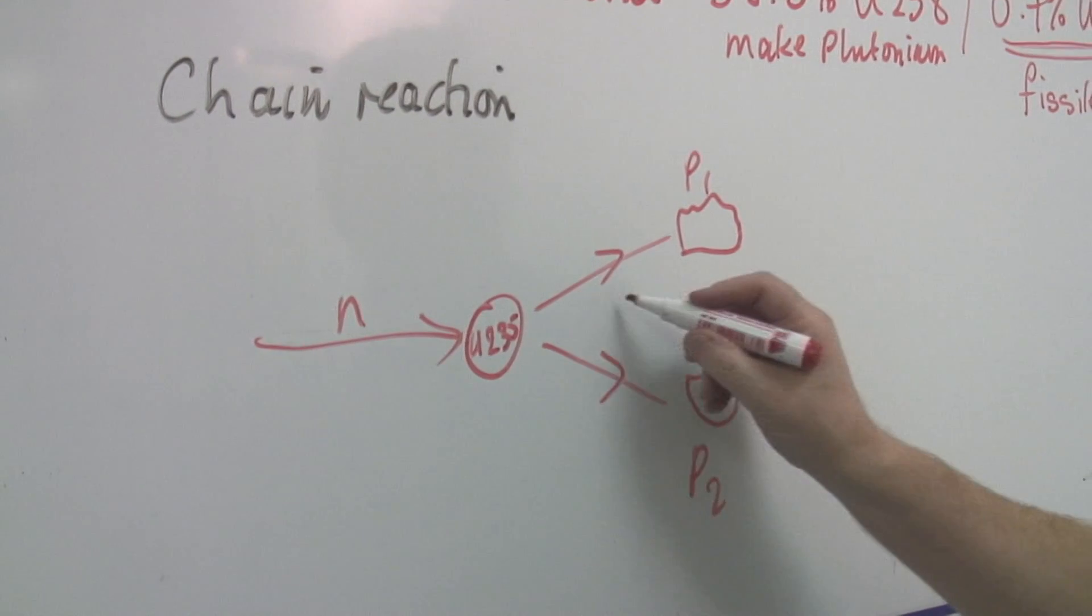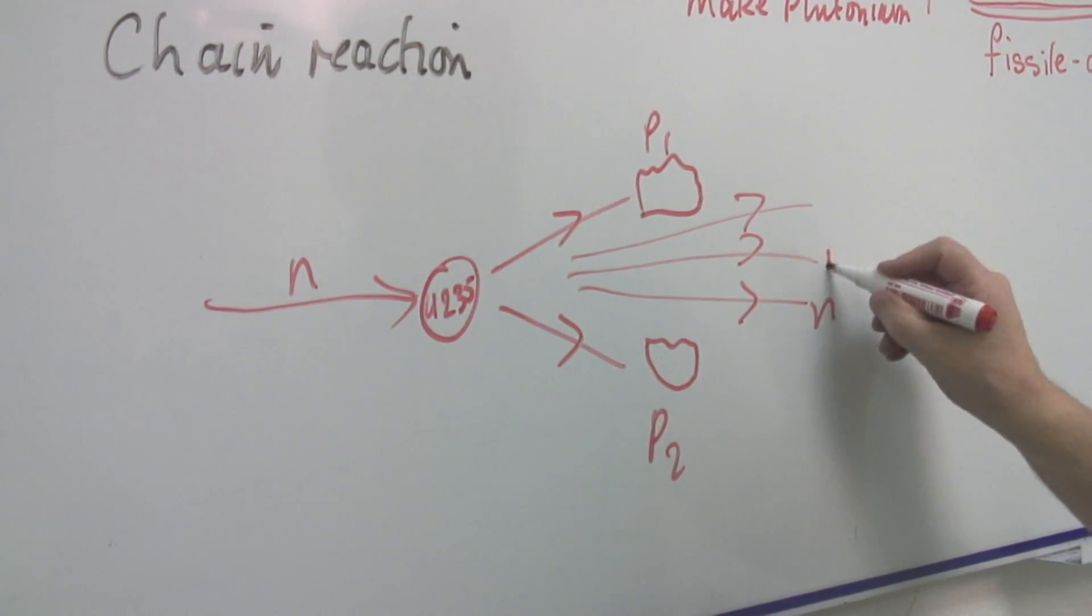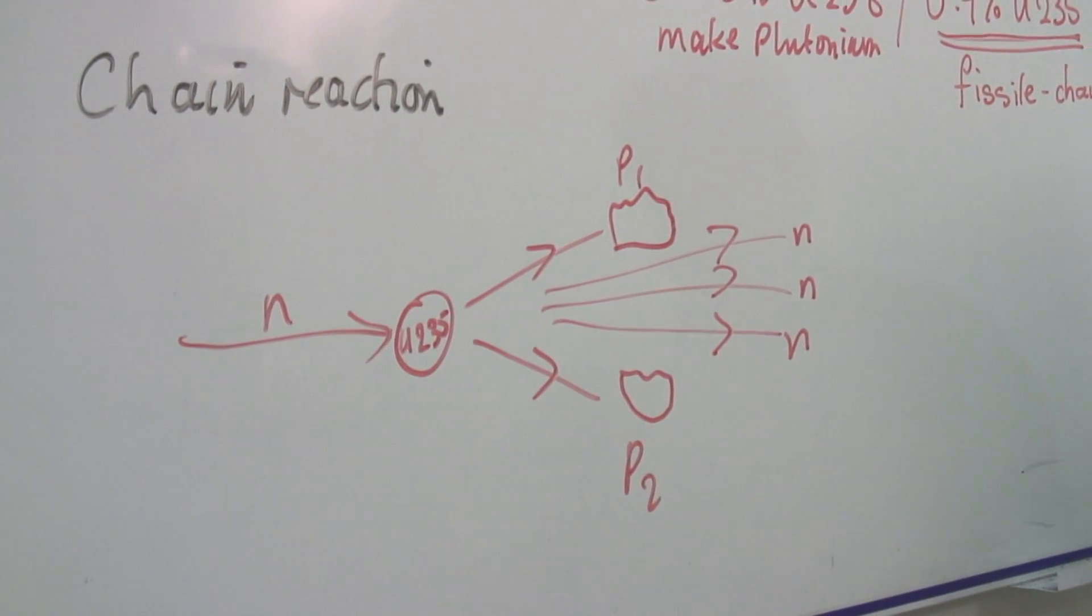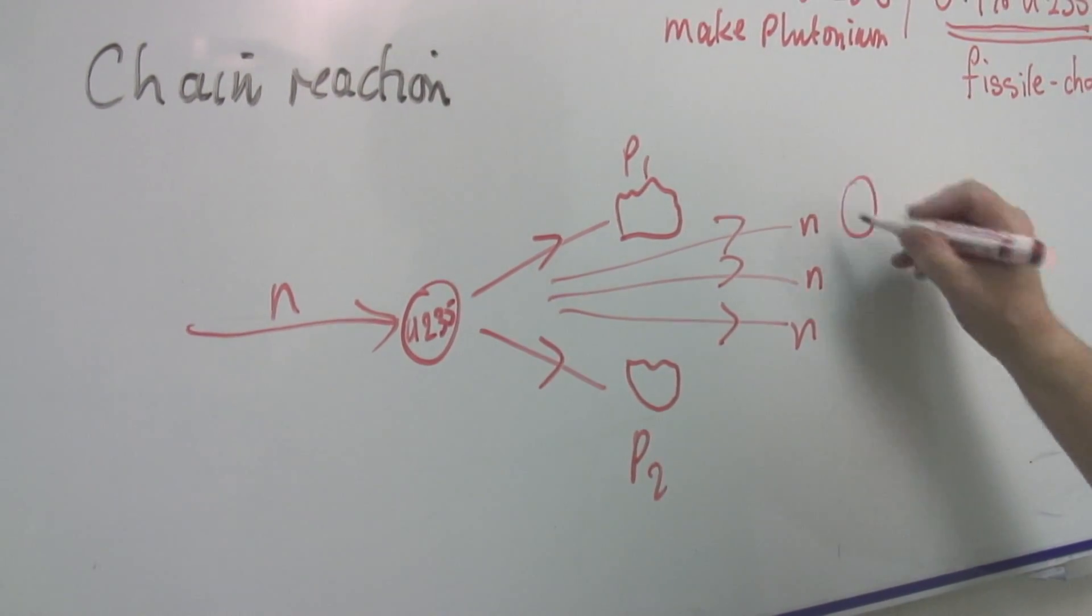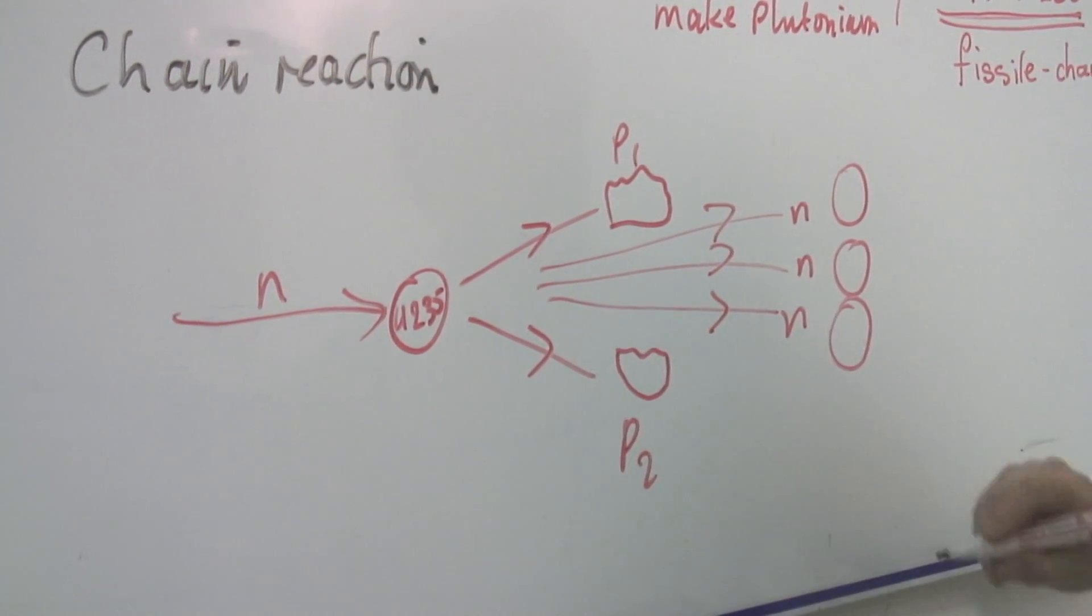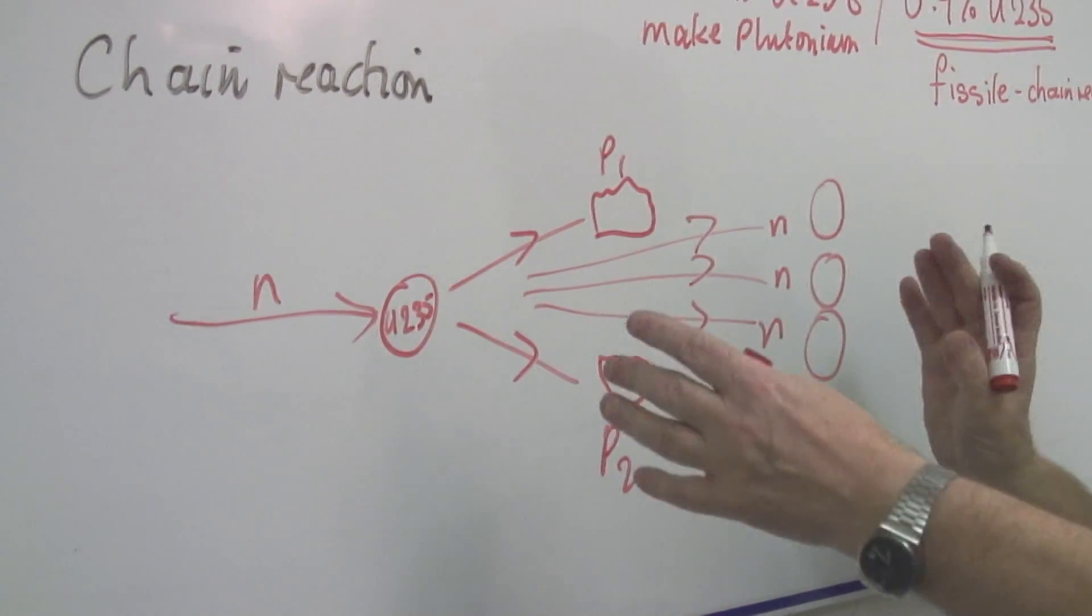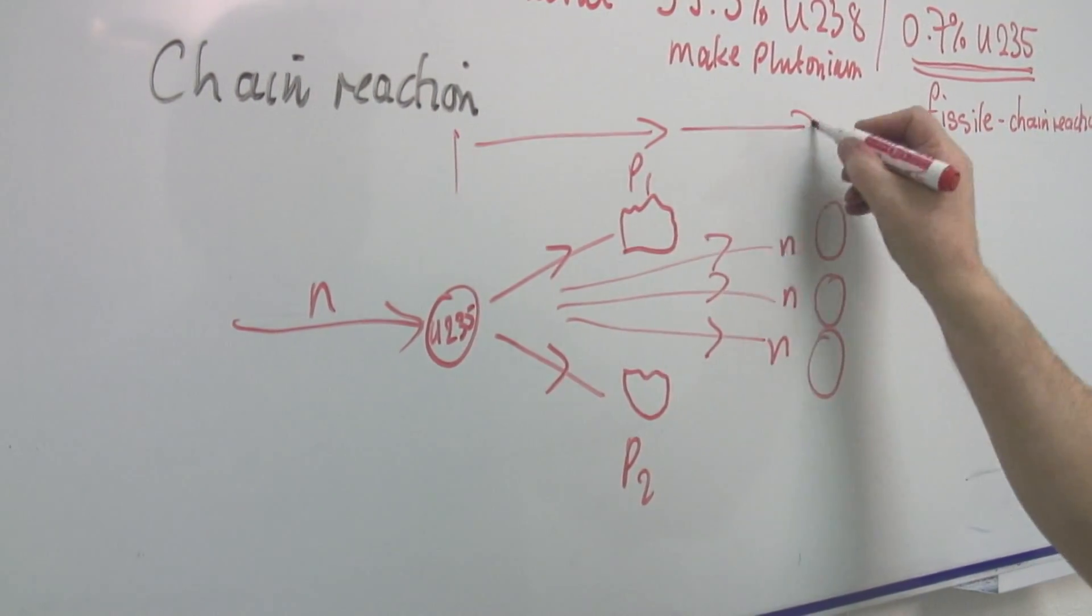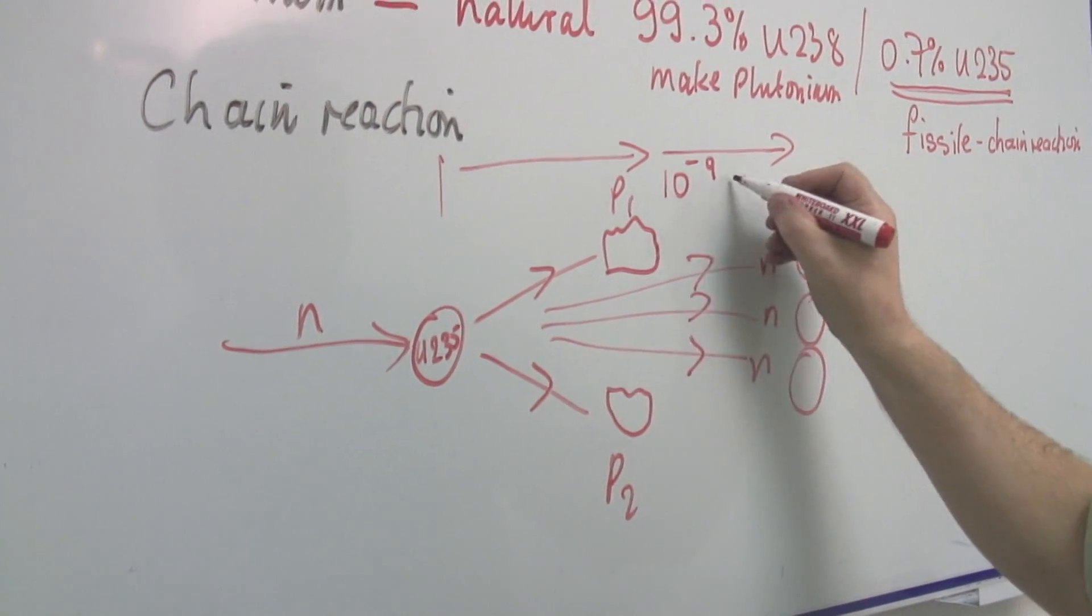And at the same time, it spits out more neutrons. Two or three of them. Now as you can imagine, if this keeps happening, if this next one also produces reactions, then you are going to get a lot of reactions. And since this takes about, this whole time, is something like ten to the minus nine seconds.